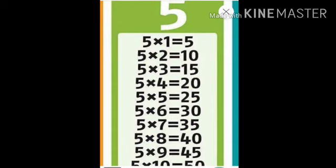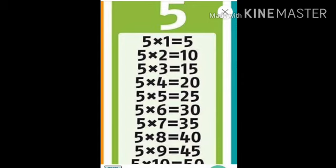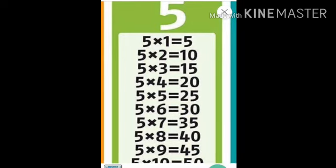Now, table of 5: 5 ones are 5, 5 twos are 10, 5 threes are 15, 5 fours are 20, 5 fives are 25, 5 sixes are 30, 5 sevens are 35, 5 eights are 40, 5 nines are 45, 5 tens are 50. Today you have to copy the 2 to 5 tables one time in your Maths Notebook. This is your today's homework.